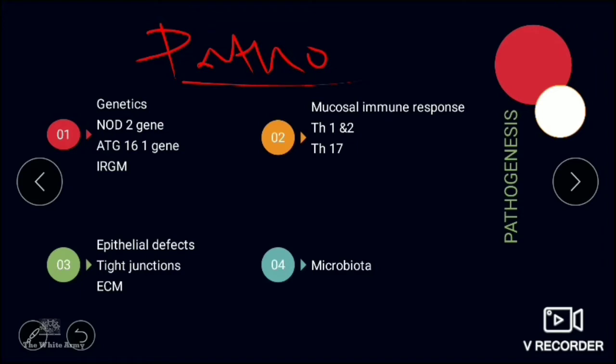Normal microbiota can become pathogenic, or cells can become more responsive to bacteria by producing receptors. Psychological factors have also been observed as causative agents. Smoking and oral contraceptives may also be contributing factors in inflammatory bowel disease.